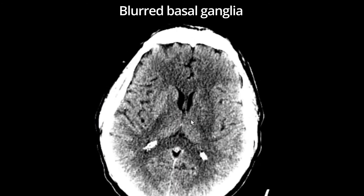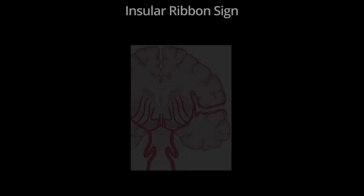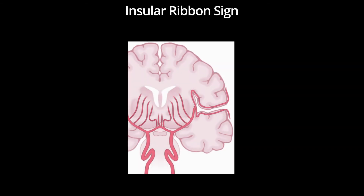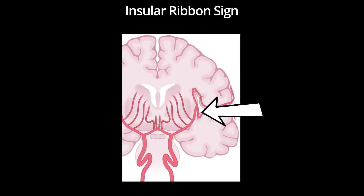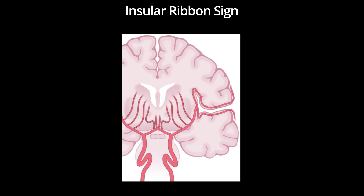Another early sign of MCA ischemia is the insular ribbon sign. The M2 segment of the MCA travels in the sylvian fissure, and is also known as the insular segment, because it supplies the insular cortex, as shown here. This segment of the MCA is most distal to both the ACA and PCA collaterals, and is therefore a watershed area, which is often affected by MCA territory ischemia.